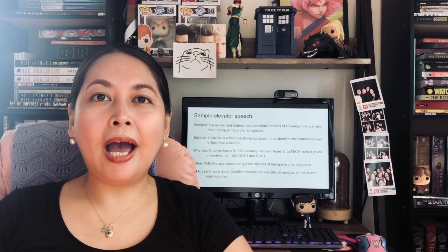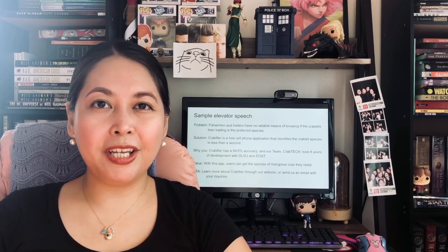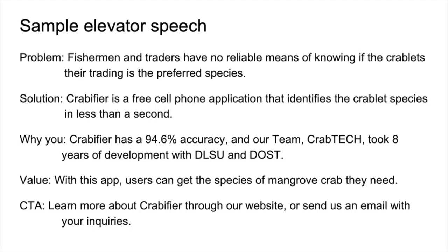To give you an example of an elevator pitch, here we describe our technology called CrabbyFire and how it is useful for species identification in juvenile mangrove crabs. If you look at the problem, it states that fishermen and traders have no reliable means of knowing if the crablets they are trading is the preferred species. The solution: CrabbyFire is a free cell phone application that identifies the crablet species in less than a second. We note that the application is free so they don't have to worry about the price.